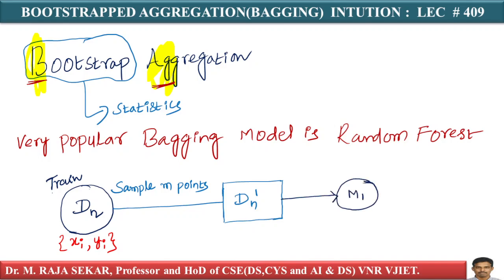How many points are there in dn dash? Let it be m points. By using those points, we are building a model m1. All the sampling is with replacement. For those of you who have forgotten what sampling with replacement means: it means I randomly pick a point from dn and put it in dn dash. Since I picked this point, I don't delete it from dn — the original dataset.